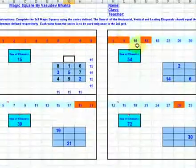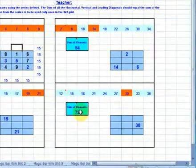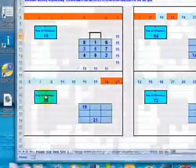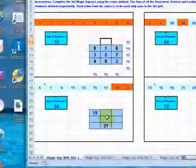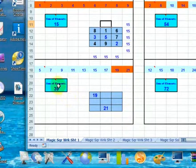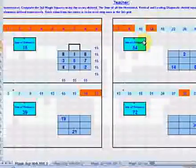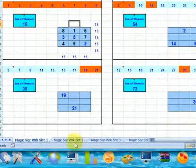What we have on the same worksheet is 3 other grids displayed here with the respective series that need to be placed within these grids exactly in the same manner. And the sum of the elements that the grid's horizontal, vertical and diagonal elements should add up to is displayed as the sum of the elements here, here and here.